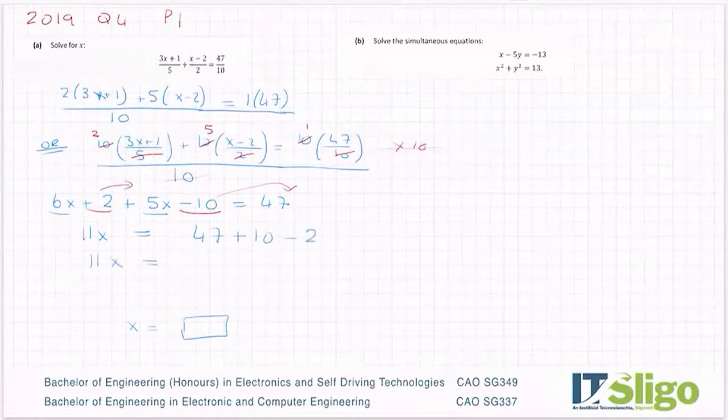So I have 11x being equal to 47, 10 is 57 minus 2 is 55. Divide by the number in front of x which is 11 and I get x being equal to 5. So that's how you do that half.